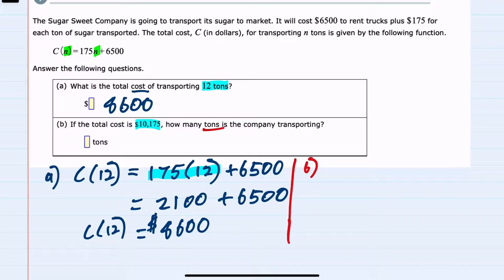Since we're given total cost and asked to find the number of tons, we're going to be looking for n. But we know that the cost for those n's, so C of n is $10,175 equals $175n plus $6,500. So we're sort of working backwards here to find the number of tons.